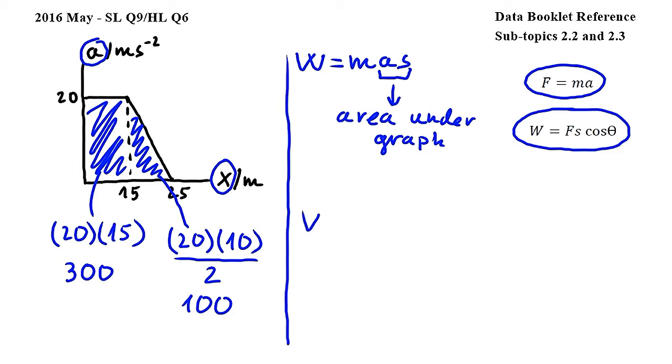Now we can go back and work out W. So this is equal to the mass, which is 3 times AS, which we found to be 300 plus 100, so 400 in total. 3 times 400 gives us 1,200 joules. Therefore, the answer to this question is C.